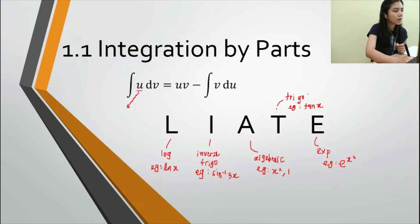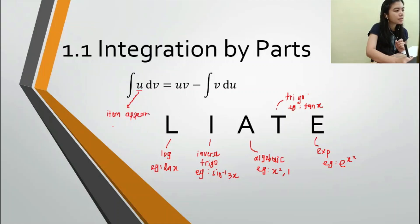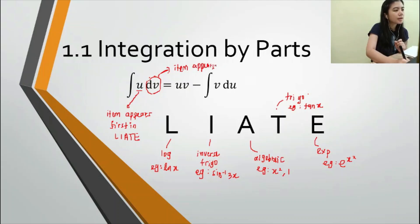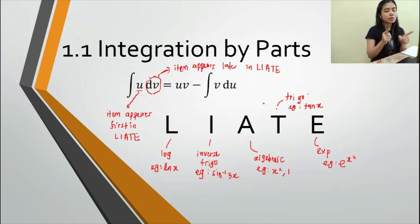So u is assigned to the item that appears first in the LRATE sequence, and dv is assigned to the item that appears later. You only have two parts, and we're going to use this formula to solve most integration problems. Let's go to the examples.